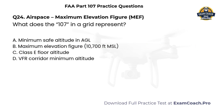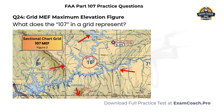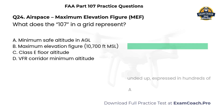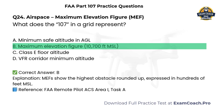Airspace. Maximum elevation figure. Refer to the sectional chart maximum elevation figure. What does the 107 in a grid represent? A. Minimum safe altitude in AGL. B. Maximum elevation figure, 10,700 feet MSL. C. Class E floor altitude. D. DVFR corridor minimum altitude. Correct answer: B. Maximum elevation figures show the highest obstacle rounded up, expressed in hundreds of feet MSL.